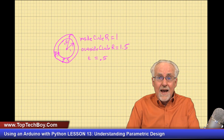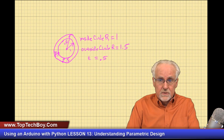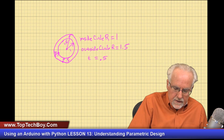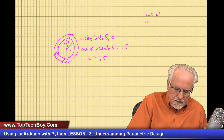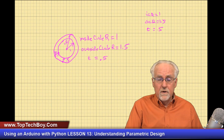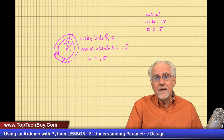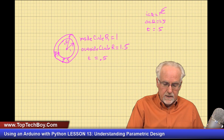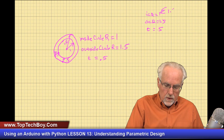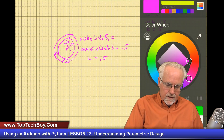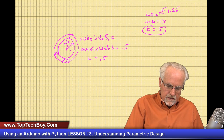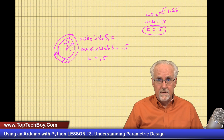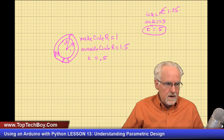What is the problem? I have over-constrained this problem. So if in Python I said inside_circle_radius equals 1, outside_circle_radius equals 1.5, and thickness equals 0.5 — I have over-constrained this. Now if I came in and wanted to make the inside diameter bigger, instead of 1 I make it 1.25, I've broken the model because the wall thickness would no longer be 0.5. I've created a non-physical object.